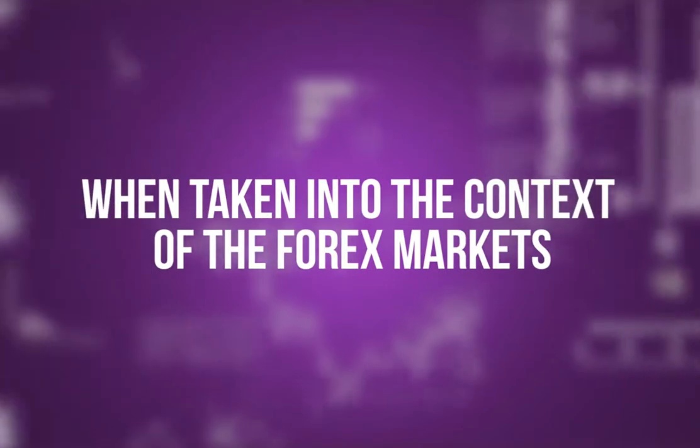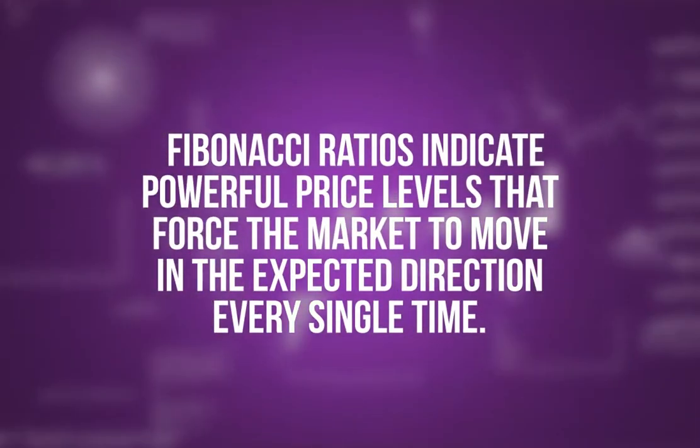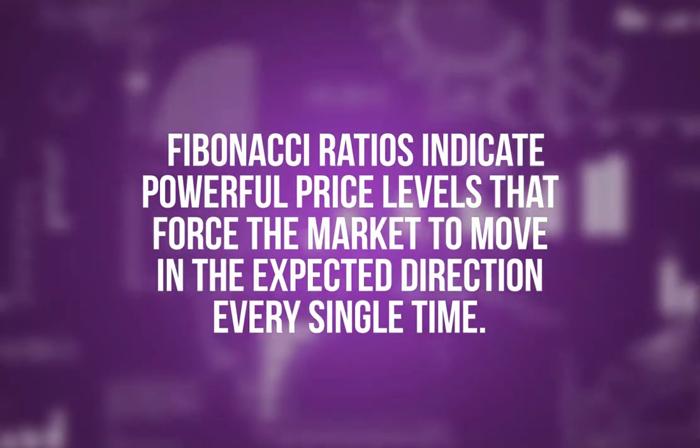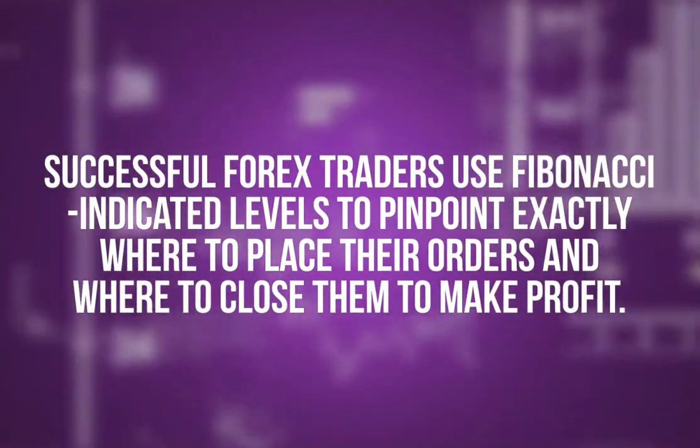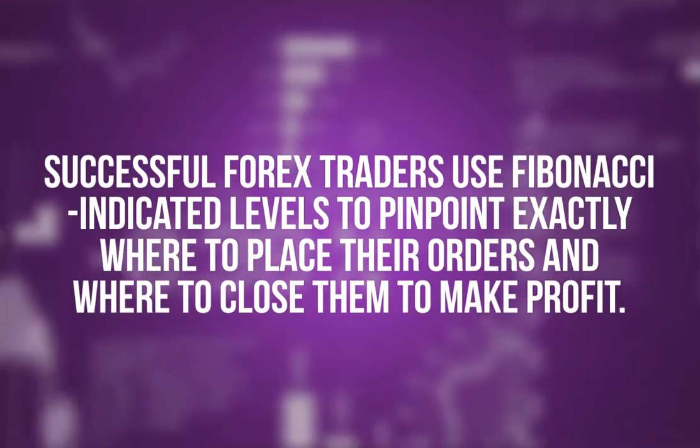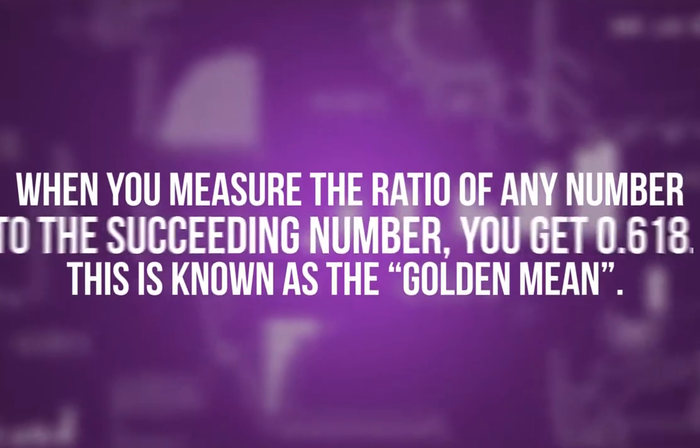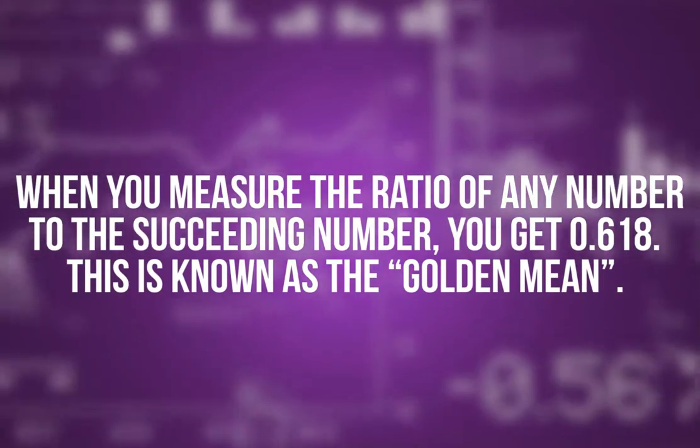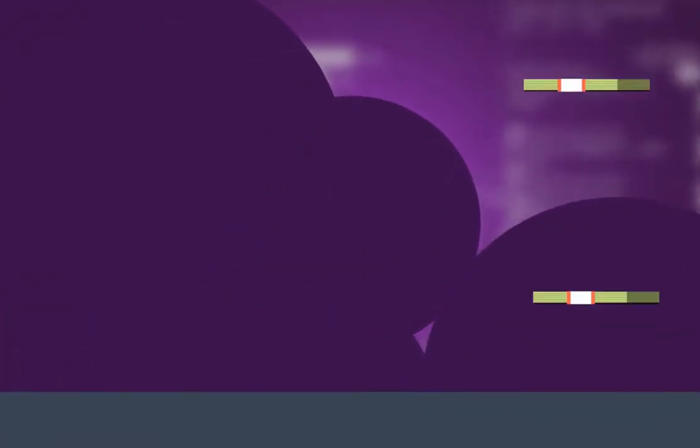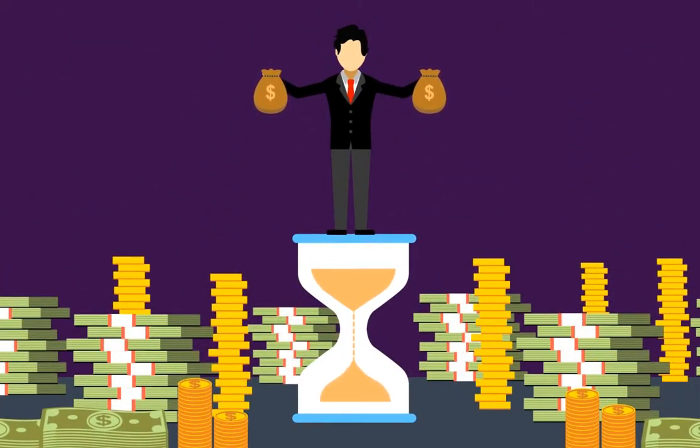When taken into the context of the Forex markets, Fibonacci ratios indicate powerful price levels that force the market to move in the expected direction every single time. Successful Forex traders use Fibonacci indicated levels to pinpoint exactly where to place their orders and where to close them to make profit. When you measure the ratio of any number to the succeeding number, you get 0.618. This is known as the golden mean. Traders following Fibonacci sequences and the golden mean have found ways to use this information to predict where the price will go with an unbeatable accuracy.